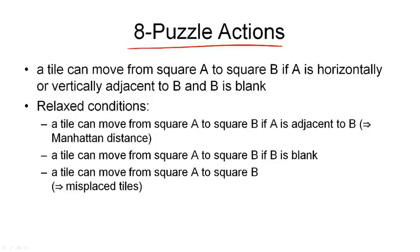So here is the original condition that we had for the applicability of actions. Namely, a tile can move from square A to square B if A is horizontally or vertically adjacent to B, and B is blank. So the condition we have here is a conjunction of two sub-conditions.